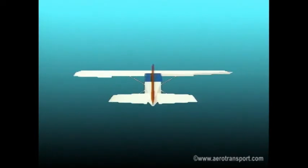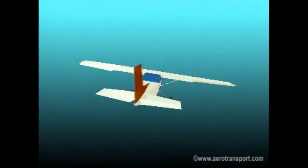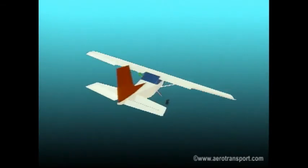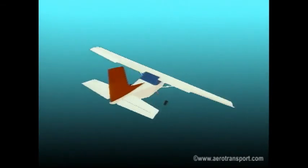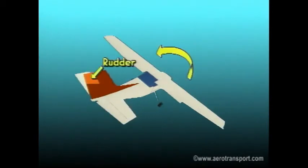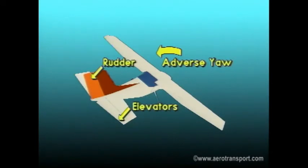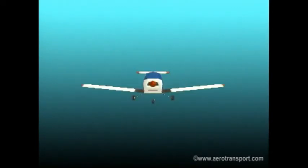Use the ailerons to roll the plane to the desired bank attitude. Maintain this attitude and at the same time control any yaw with the rudder. Avoid the temptation to use too much rudder — remember, only use the rudder to counter the adverse yaw. To maintain the correct pitch, use the elevators. The horizon is your reference point, and keep an eye out for other aircraft throughout the turn.